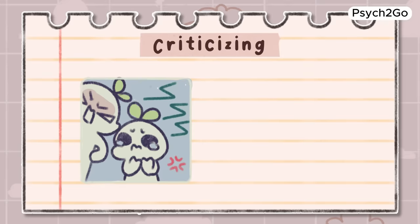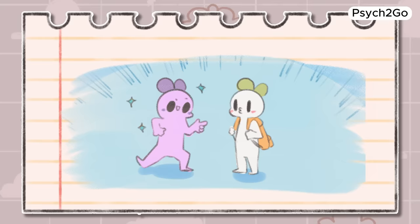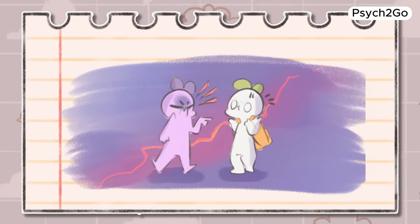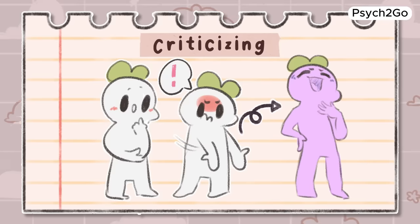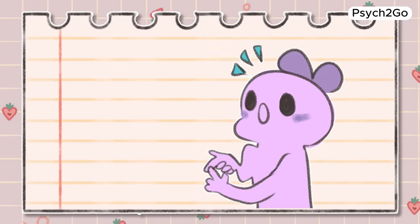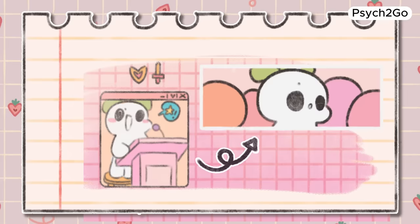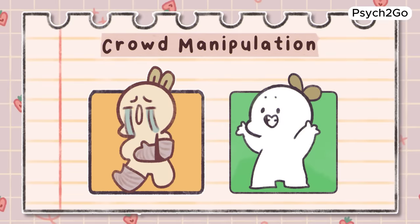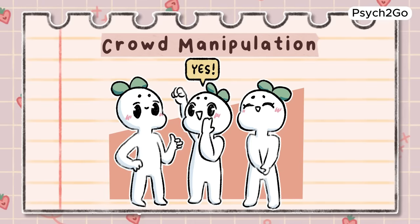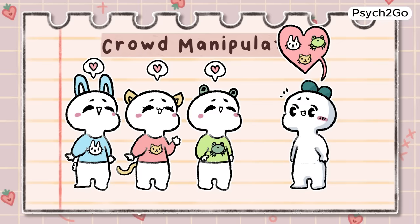Criticizing. Manipulators need you to feel insecure in order for their tactics to work. They may disguise their criticism as care or thoughtfulness when that is not the case, then immediately follow up their criticism with a solution that benefits them. Crowd manipulation. Using strong and emotional words is a way politicians often influence crowds into believing a situation is more dire or more positive than it is, typically by appealing to emotions or flattering them.